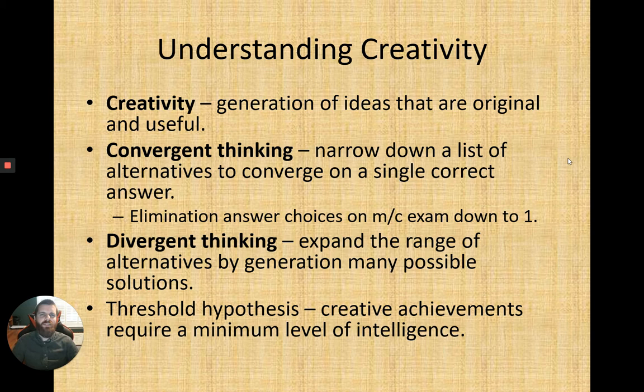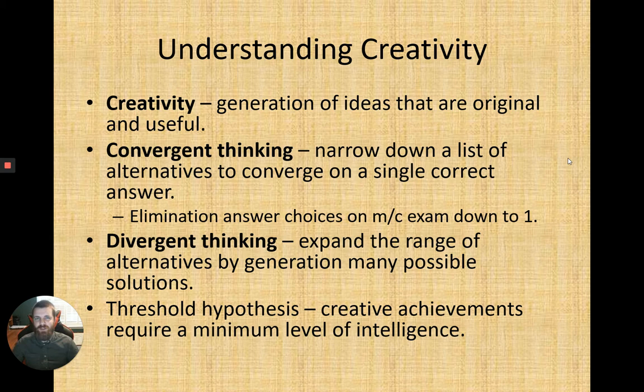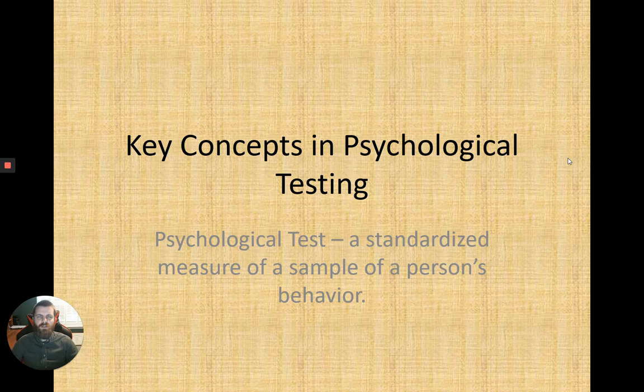Some of the world's most brilliant minds have proposed what's called the threshold hypothesis about creativity and creative achievement. The idea is that to be truly classified as a creative individual making substantial achievements, a minimum level of intelligence is required. Having a creative mind can only be expressed in meaningful achievement if a certain level of intelligence is maintained.